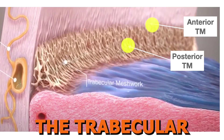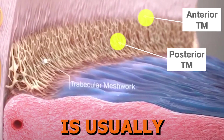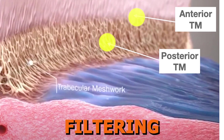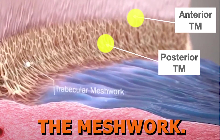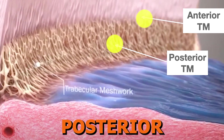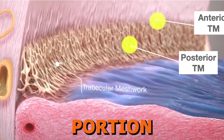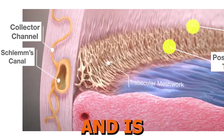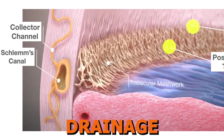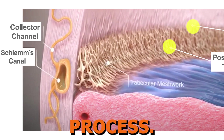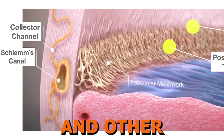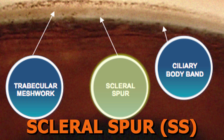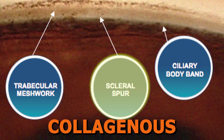The anterior portion of the trabecular meshwork is usually less pigmented and is considered the non-filtering portion of the meshwork. The more posterior portion of the trabecular meshwork overlies Schlemm's canal and is more active in the drainage process. This is the area of target for MIGS and other treatments like SLT.